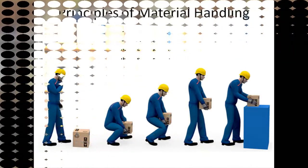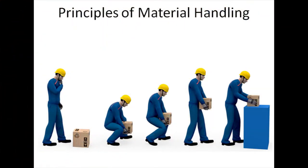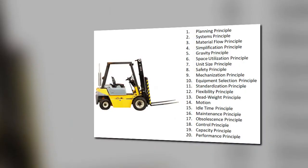We have almost 20 basic principles guiding the material handling system. These are: planning principle, system principle, material flow principle, simplification principle, gravity principle, space utilization principle, unit size principle, safety principle, mechanization principle, equipment selection principle, standardization principle, flexibility principle, dead weight principle, motion principle, idle time principle, maintenance principle, obsolescence principle, control principle, capacity principle, and performance principle.